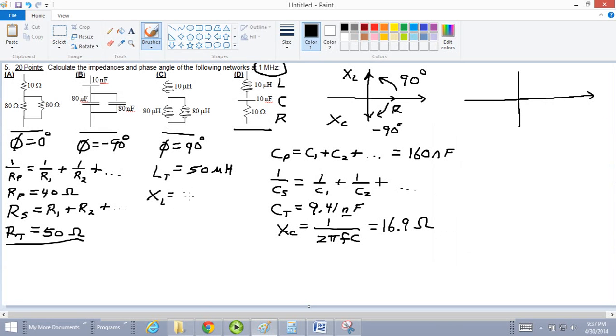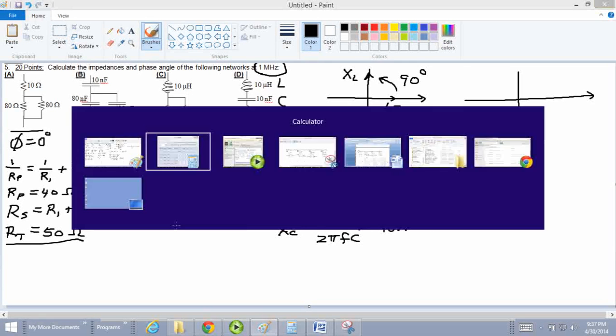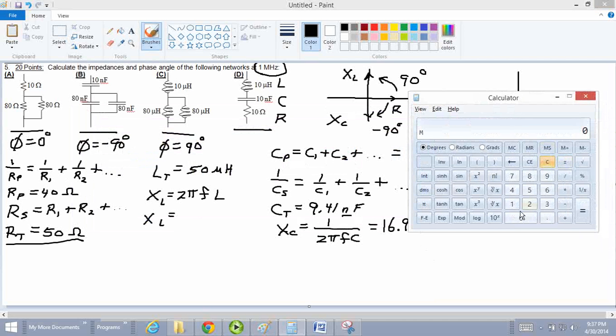And I'm going to go ahead and store that in memory. XL is 2 pi times the frequency times the inductance. Clear this out. 2 times pi times frequency times inductance. 50 micro is 10 to the negative 6th. Microhenries equals. So we get 314 ohms.